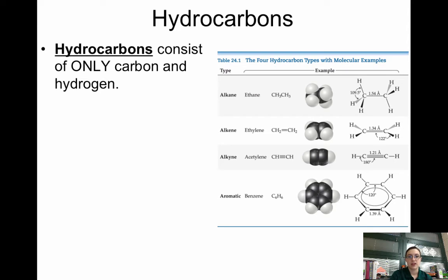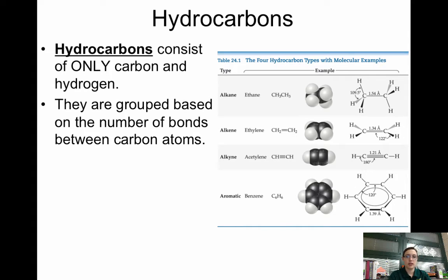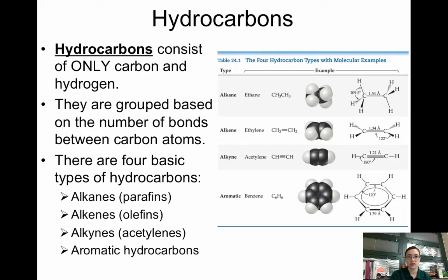So hydrocarbons. Think about what hydrocarbon means, right? Hydrogen and carbon. So hydrocarbons consist of only carbon and hydrogen. They're going to be grouped based on the number of bonds between the carbon atoms. So if carbon is all single bonds, it's going to be called one thing. If carbon has a double bond, it's called something else. So there are four basic types of hydrocarbons.